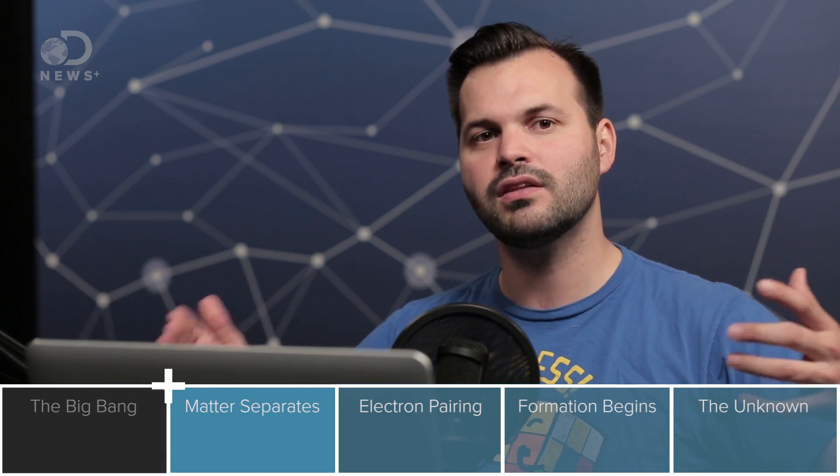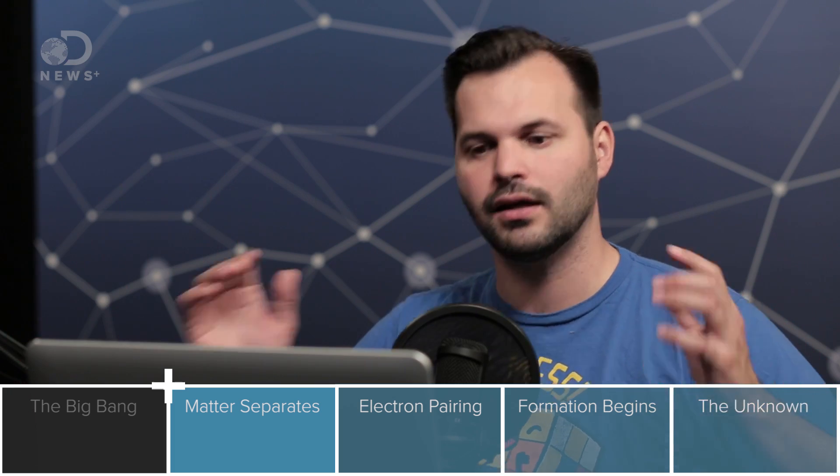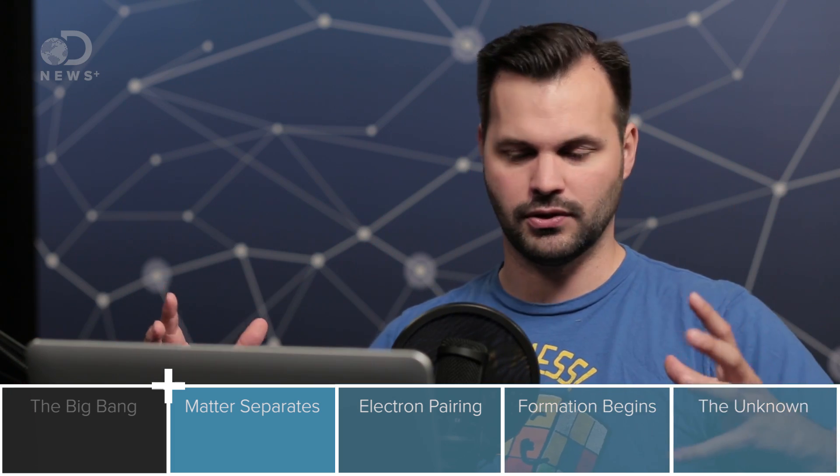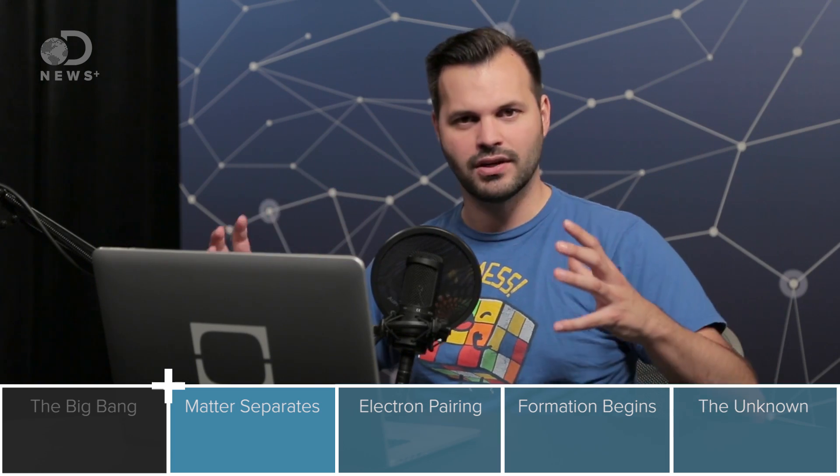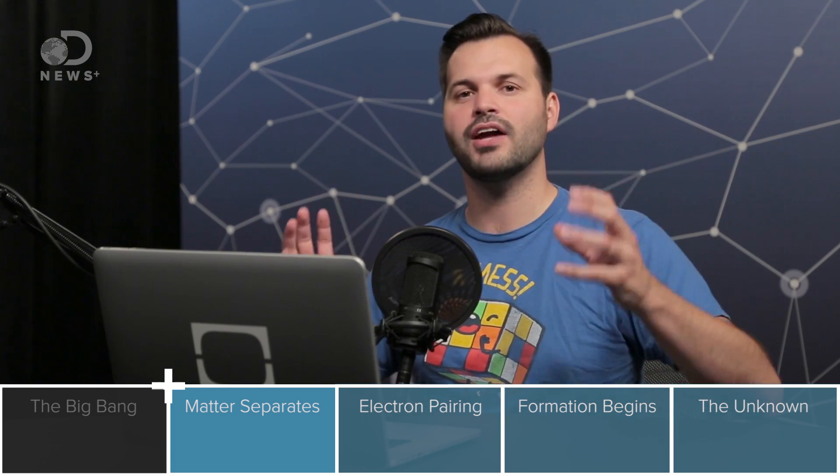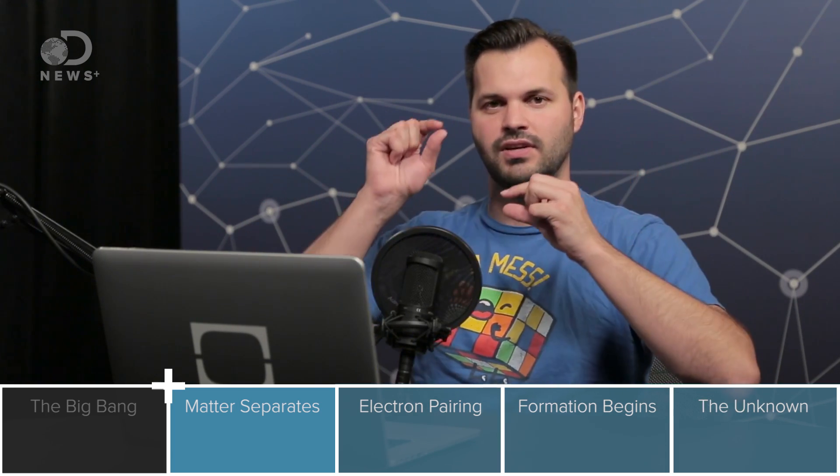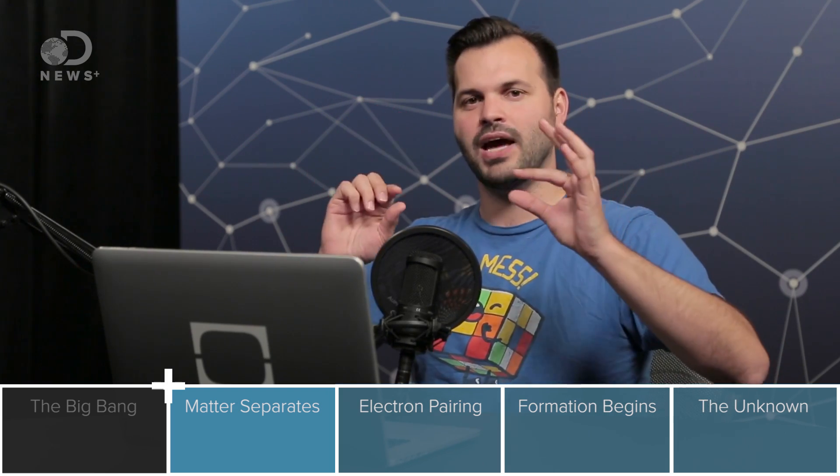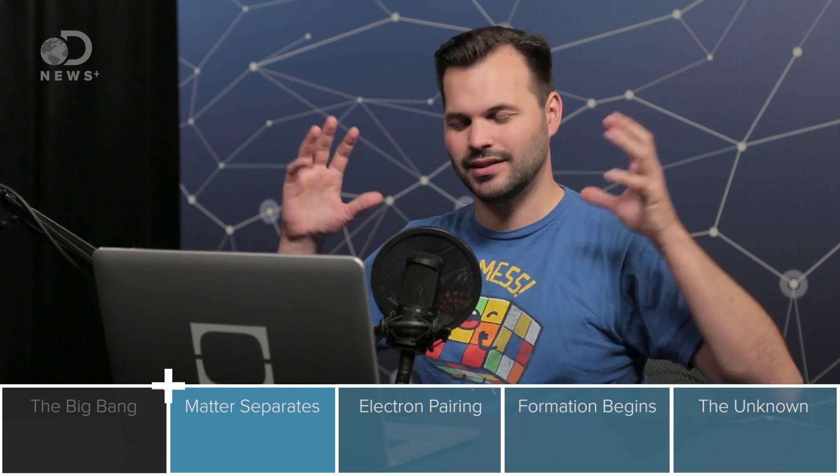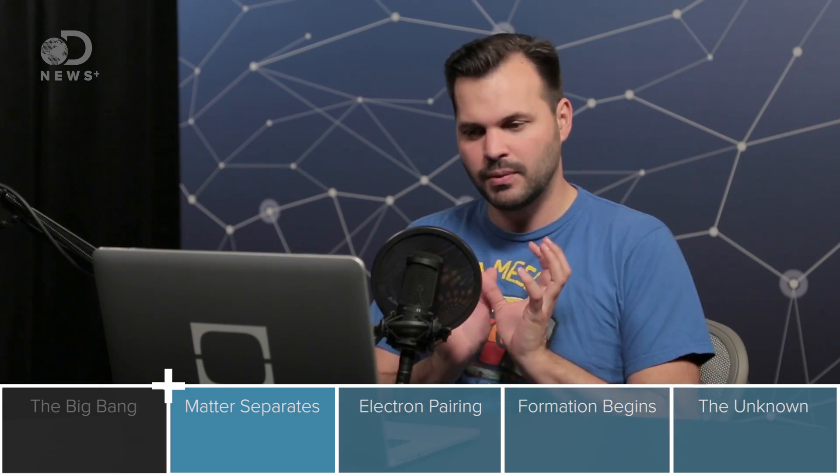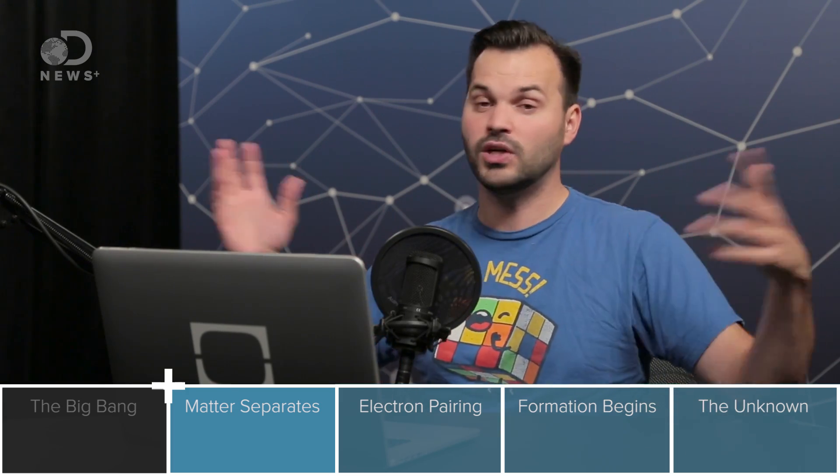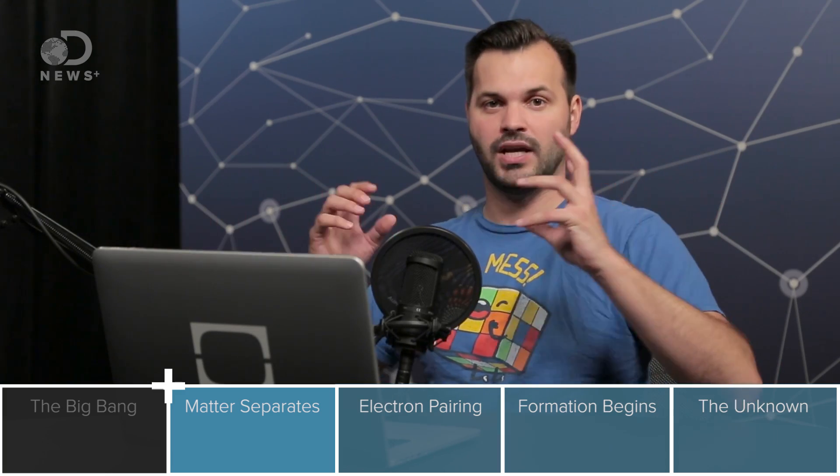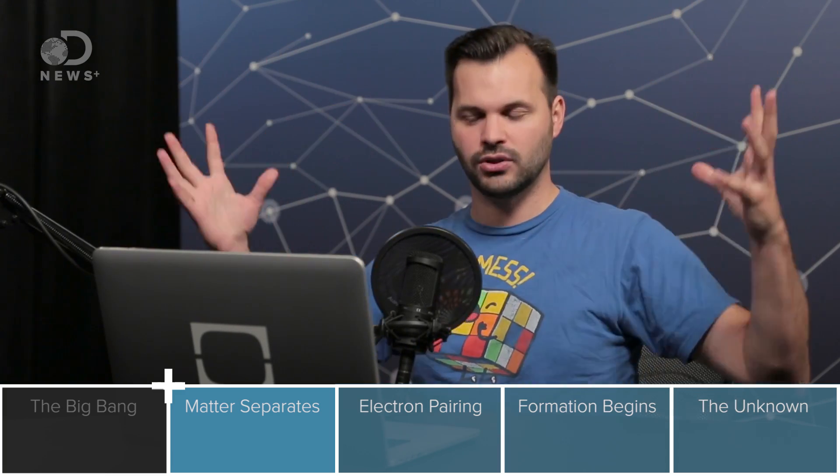As the trillionths of a second ticked by, matter and energy cooled off enough to separate from each other. And matter and antimatter were created. Think of a hydrogen atom where the middle is positive and the electron is negative. And antimatter would be the opposite of that. And at the beginning, it was half and half. 50% matter, 50% antimatter. We don't see much antimatter today because, for some reason, there was slightly more matter. And when they come in contact, they annihilate each other and create energy.